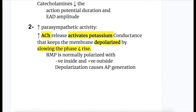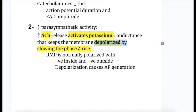Increased parasympathetic activity: increased acetylcholine release in the parasympathetic system activates potassium conductance, which keeps the membrane depolarized by slowing the phase 4 rise. So increased phase 4 causes tachycardia, and slowing of phase 4 causes bradycardia.